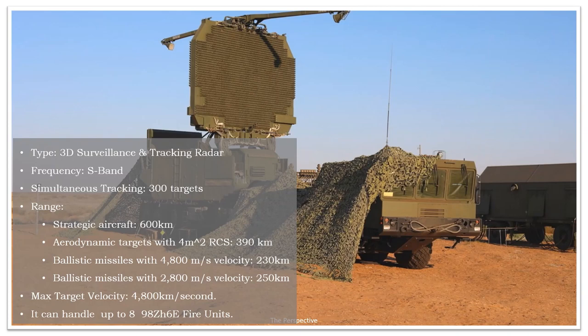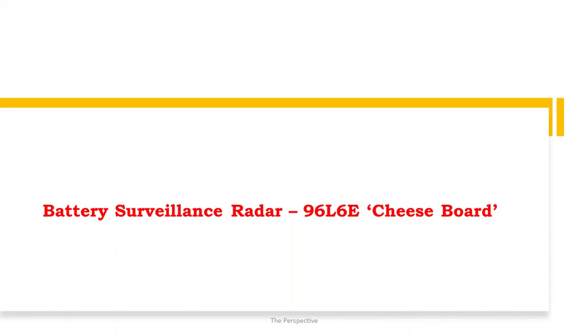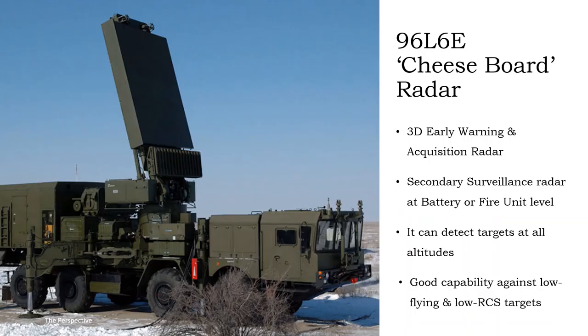The centerpiece of the S-400 system is the 91N60 Big Bird surveillance radar. This is a 3D radar which operates in the S-band and it can simultaneously track 300 targets. Maximum range of the radar is 600 kilometers. It can also track ballistic missiles with a maximum velocity of 4,800 meters per second.